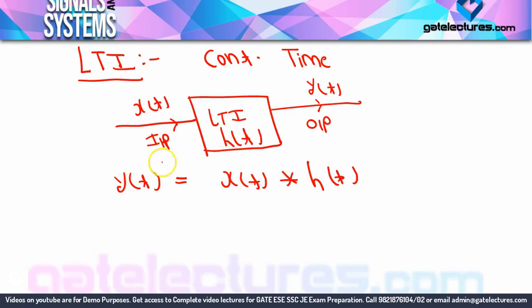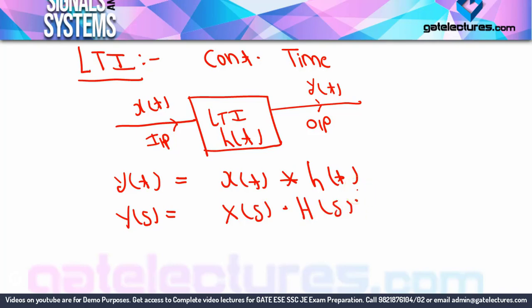If I consider Laplace transform on both sides, you must remember from today: whenever there is convolution in the time domain, there will always be multiplication in the Laplace domain. The opposite is also true — whenever there is convolution in the Laplace domain, there will be multiplication in the time domain. Regarding the word convolution we keep using: if you don't know its definition yet, wait for the numericals. When we do the graphical method in discrete, the definition will become completely clear. For now, it is just a different type of multiplication of two signals, which we will study in the numericals.